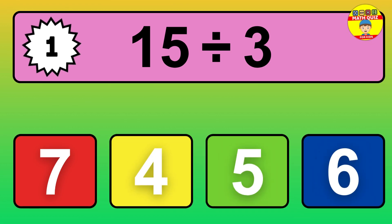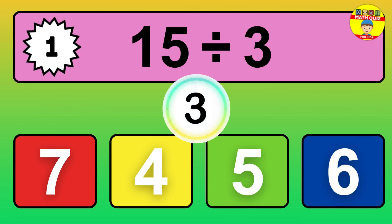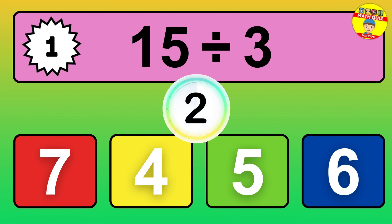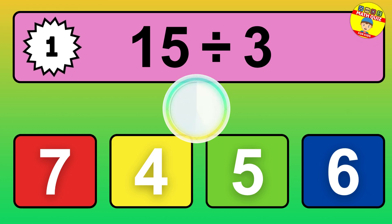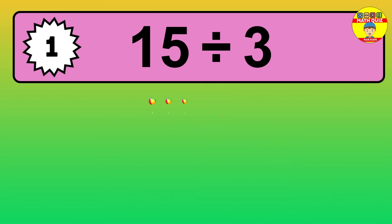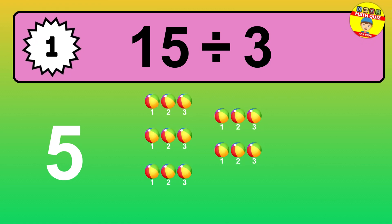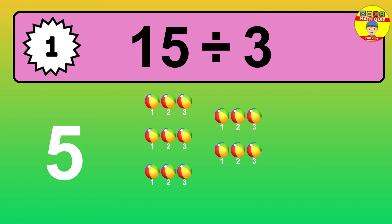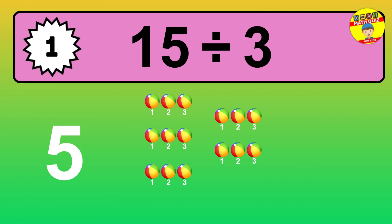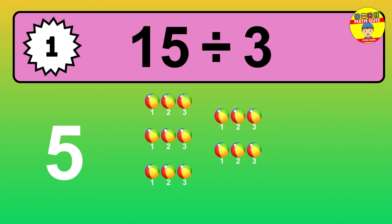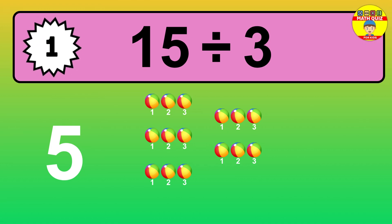15 divided by 3 — time to think! Let's go to the solution. Divide the number 15 by 3. Each group contains 3 units, so dividing 15 by 3 results in 5 equal groups. Thus, the result is 15 divided by 3 equals 5.